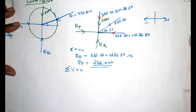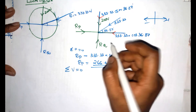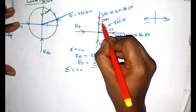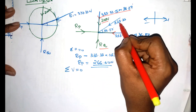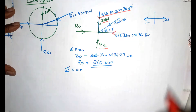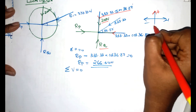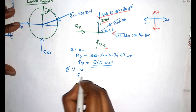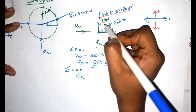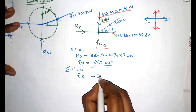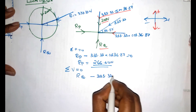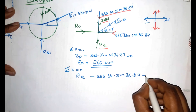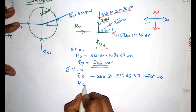Sigma V equals zero — vertical force equals zero. The vertical forces include RQ, and we solve: RQ plus the components minus 333.33 sin 36.87 minus 200 equals zero. That gives the value of RQ.